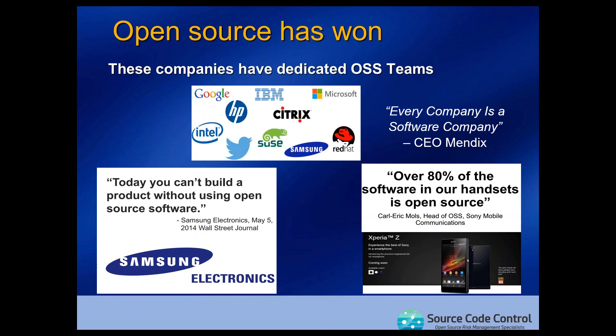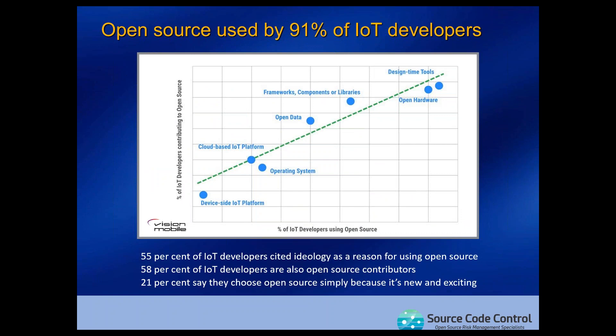Companies you would not have thought receptive to open source, like Microsoft, now have fully dedicated open source teams. Indeed, Microsoft is one of the largest contributors to open source projects on GitHub. Another example the UK tech sector is very involved with is the Internet of Things. A recent survey by Vision Mobile found that 91% of software developers in the IoT space are electing to develop using open source technologies.